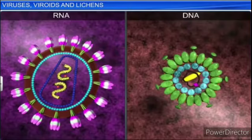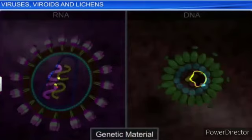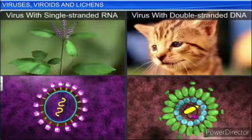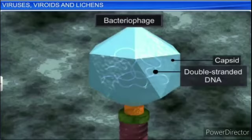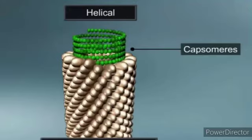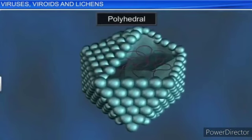No virus contains both RNA and DNA. A virus is a nucleoprotein and the genetic material is infectious. Viruses that infect plants generally have single-stranded RNA, while viruses that infect animals have either single or double-stranded RNA or double-stranded DNA. Bacterial viruses, or bacteriophages — viruses that affect bacteria — are usually double-stranded DNA viruses. The protein coat, called the capsid, is made up of small subunits called capsomeres, which protect the nucleic acid (DNA or RNA). These capsomeres are arranged in helical or polyhedral geometric forms.